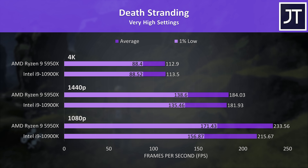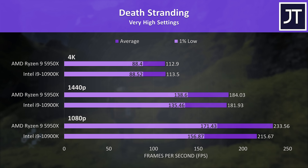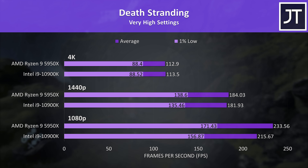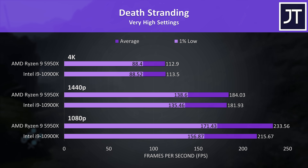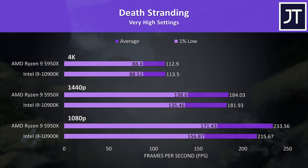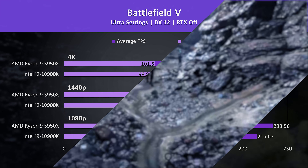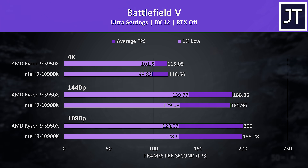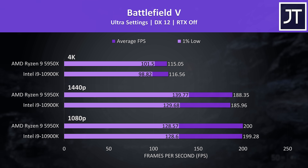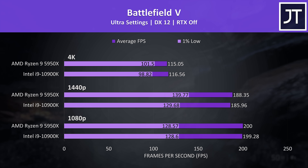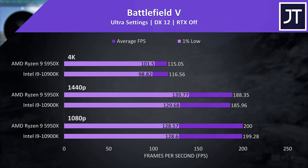Death Stranding is a game that I've found to generally see nice benefits with Zen 3. At 1080p the 5950X was 7% ahead of the 10900K in average FPS, then only minor changes at 1440p, and both were essentially equivalent at 4K. Battlefield 5 was tested in campaign mode, and this was another game where no major differences were recorded regardless of resolution — however this may be because the game has a 200 FPS cap, which both processors were reaching at 1080p.